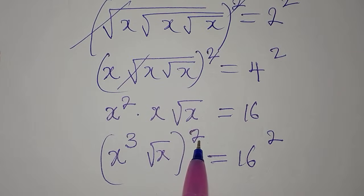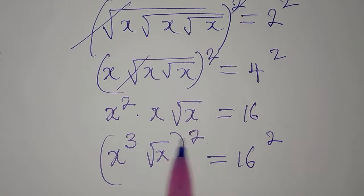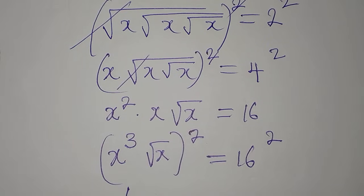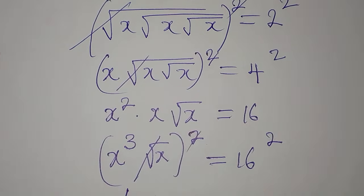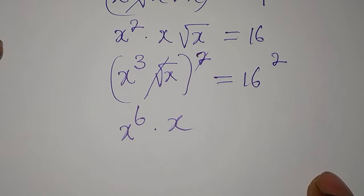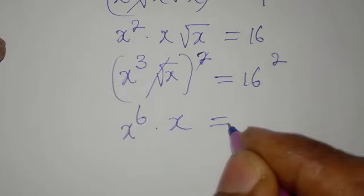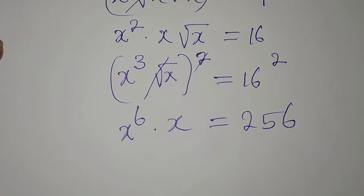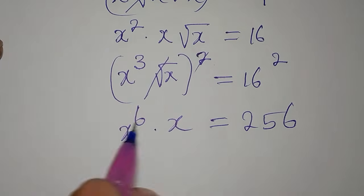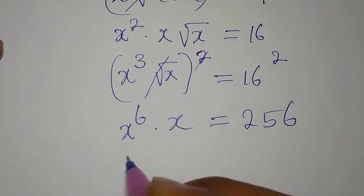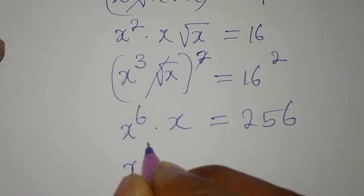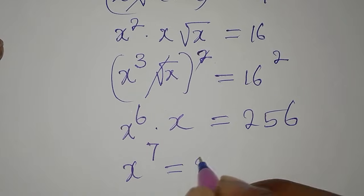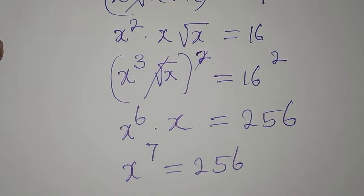We have x to the power of 3, to the power of 2. When we have two powers, we multiply them, so this becomes x to the power of 6. Then multiplying by x gives us x to the power of 7, and this is equal to 256.